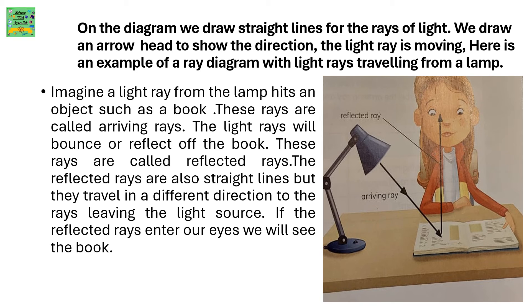Imagine a light ray from the lamp hits an object such as a book. These rays are called arriving rays. The light rays will bounce or reflect off the book. These rays are called reflected rays.